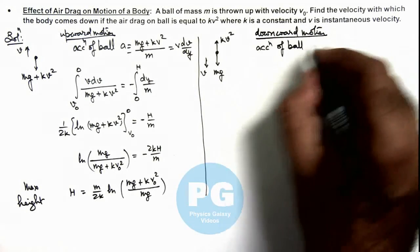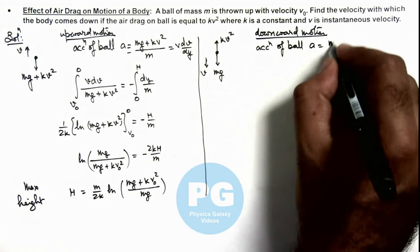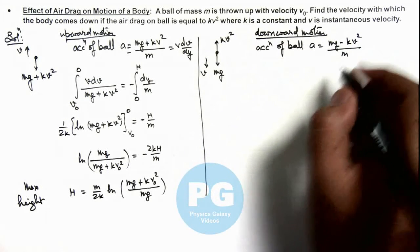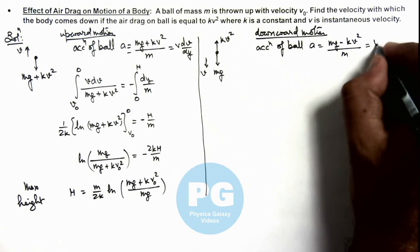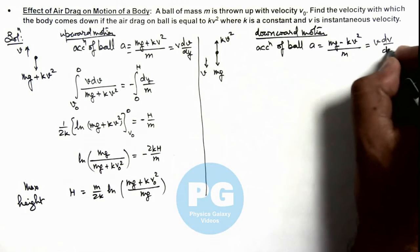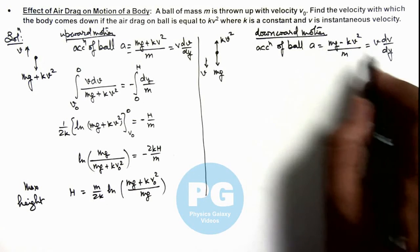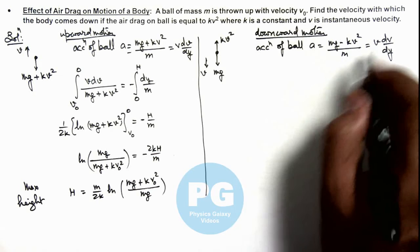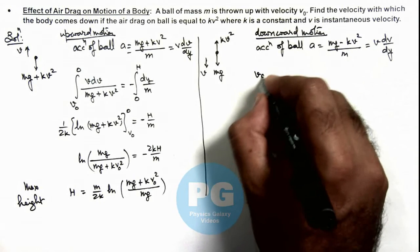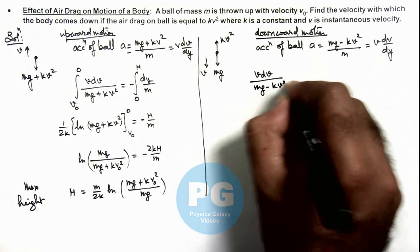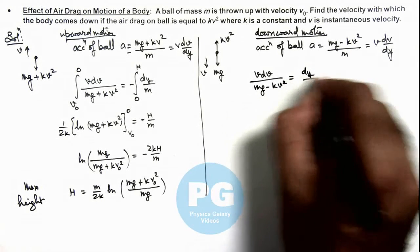So acceleration can be given as mg minus kv² by m, as it will be accelerating down. And again if it is written as v dv over dy, and just be careful here we are measuring y from the topmost point from where it started its downward motion. So this can be written as v dv over mg minus kv² is equal to dy by m.